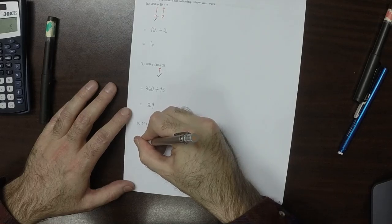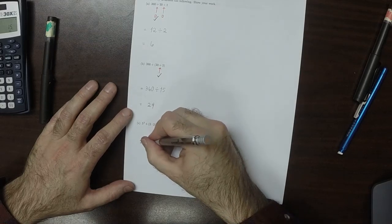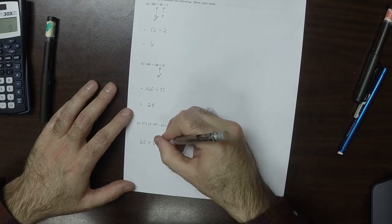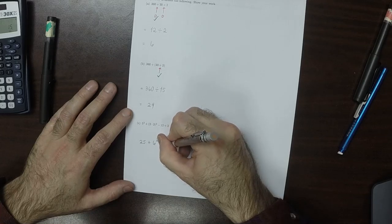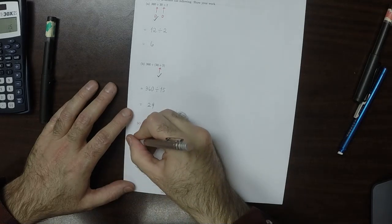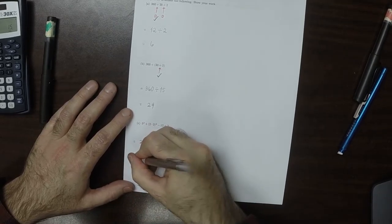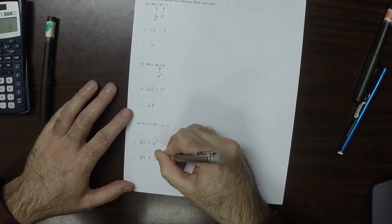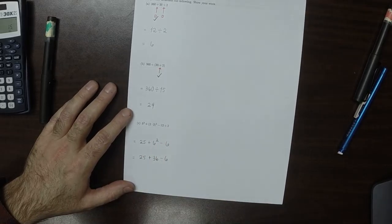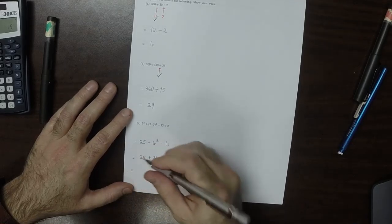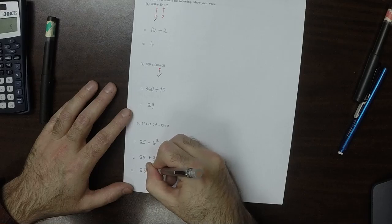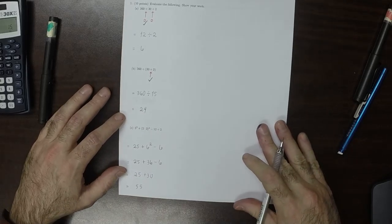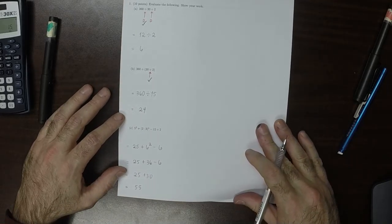This one, that's 25 plus 6 squared minus 6. So that would be 25 plus 36 minus 6. So 25 plus 30, 55. That's part, question one.